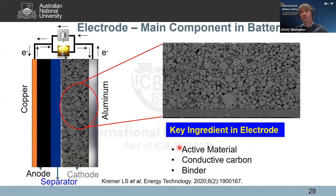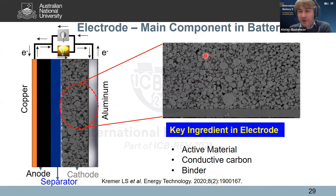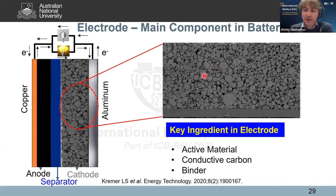Zooming in on the structure of individual electrodes, they are typically multi-component systems. Looking at a cross-sectional AFM image of a hypothetical cathode material: brighter contrast shows active material particles; there are three ingredients total — active material, conductive carbon additive, and a binder (basically a glue to hold the structure together). In between the active material particles, you can see some grayish stuff — conductive carbon introduced to improve conductivity of the electrode.